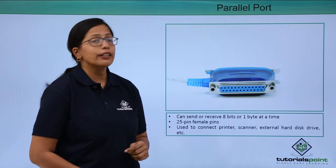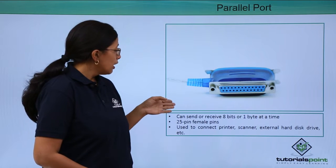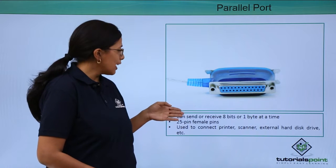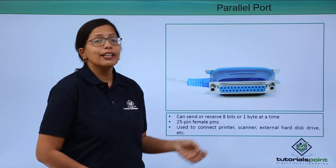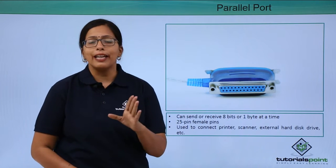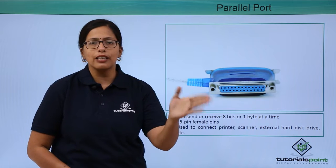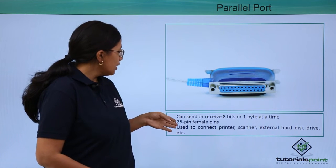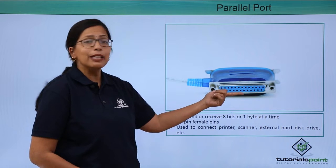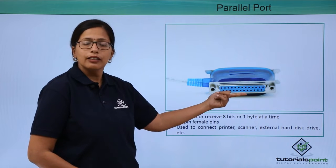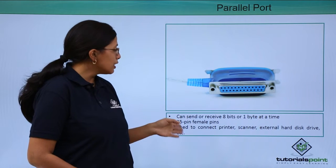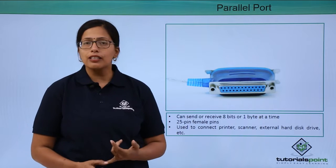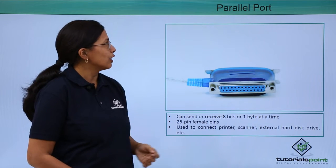Let's look at the parallel port. As the name suggests, the parallel port will send 8 bits of data at one time, unlike the serial port that was sending one bit at a time. It has 25-pin female pins, which you can see here. It is used to connect to printer, scanner, external hard disk drive, etc.